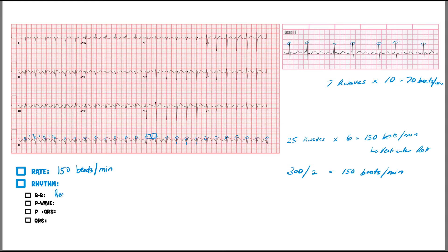Next, let's look at the P wave in lead 2 — it has to be upright. I'm having a hard time finding the P wave. There might be something, but it doesn't look like a characteristic P wave. If anything, it's kind of pointed — sawtooth in nature. In AVR it's supposed to be inverted, but I don't really see a clear P wave there either. So again: no clear P wave — go to V1.